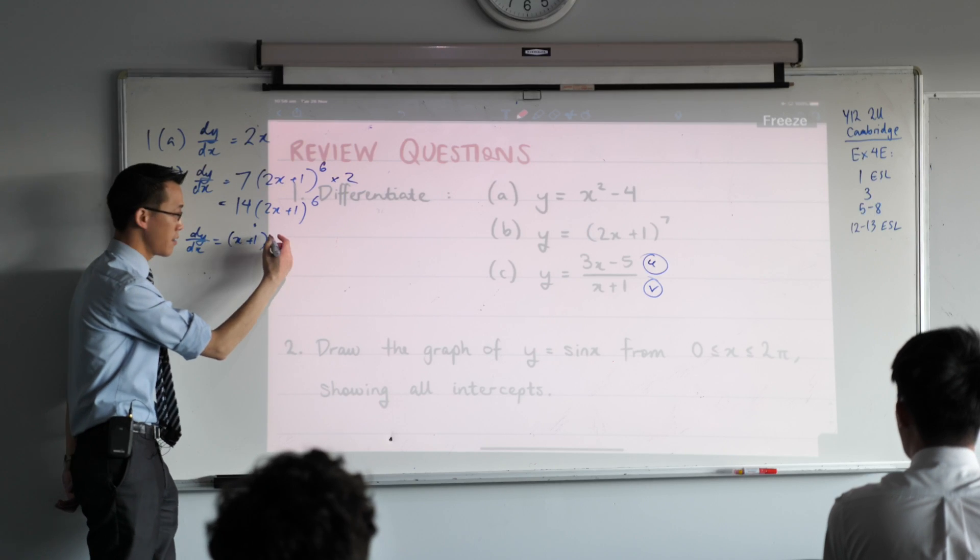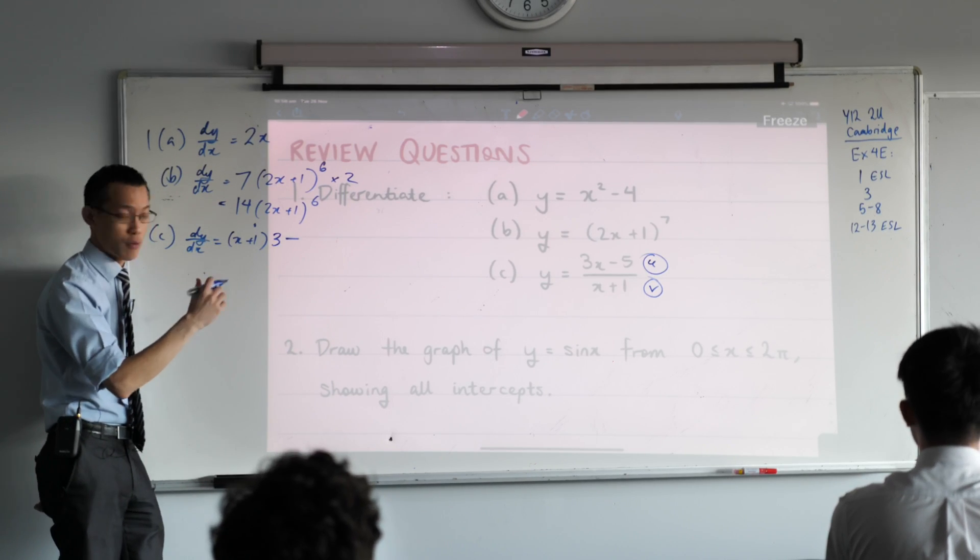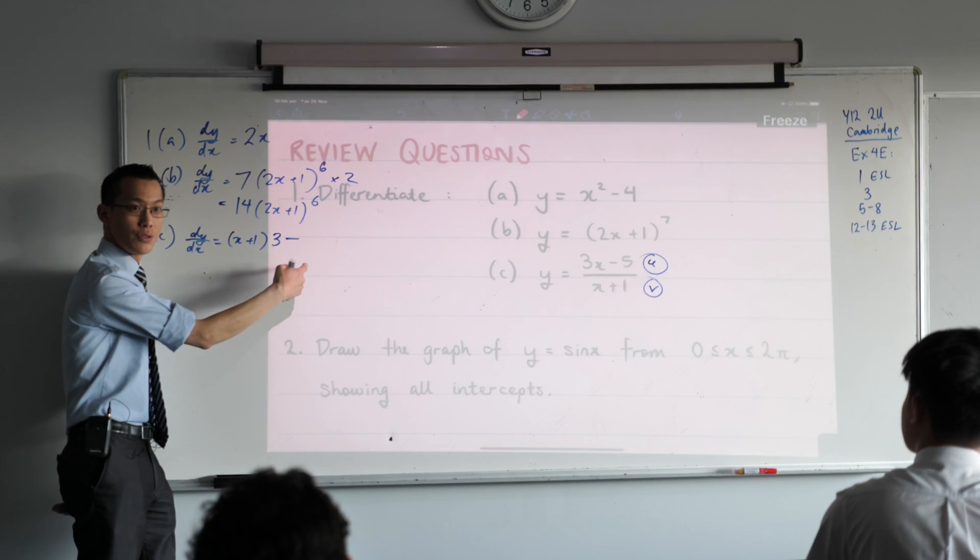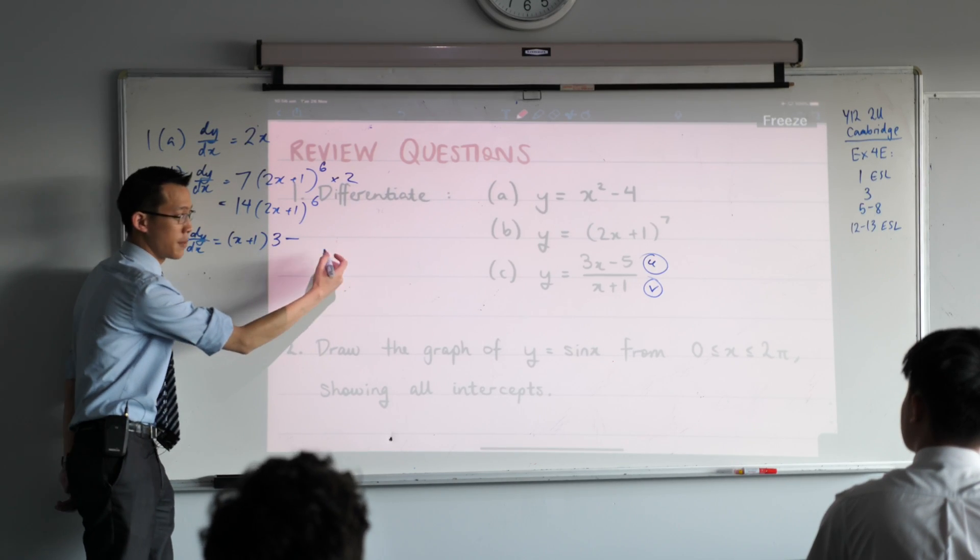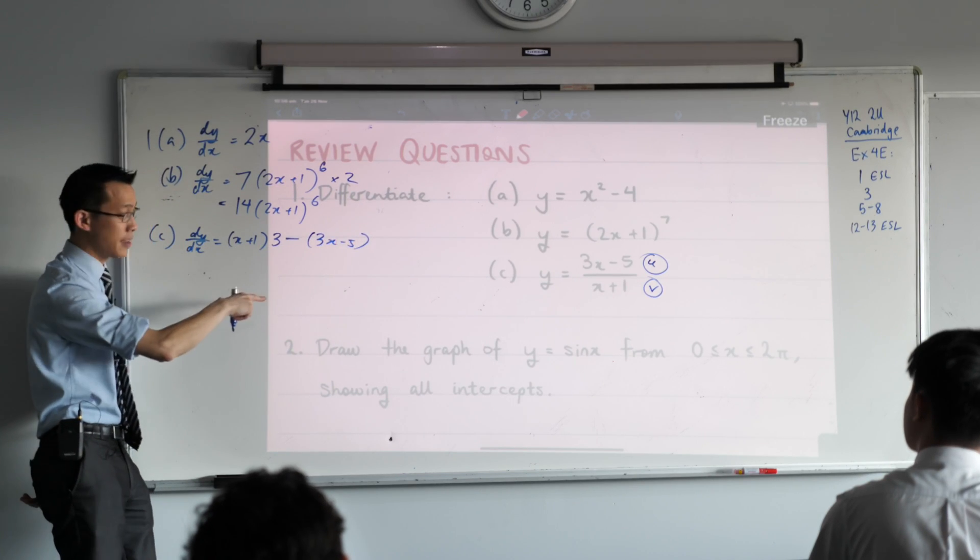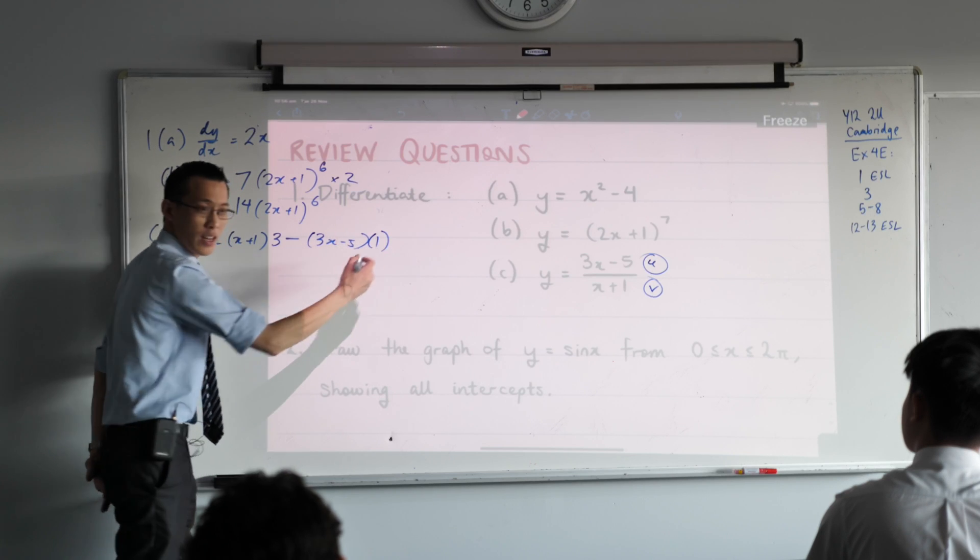Then I do a minus—that's tricky because that's different to the product rule. And then I go again, but instead of v u dash, I'm going to do u v dash. So here comes u: 3x minus 5. V dash in this case is 1, which doesn't change things, but I like to write that it's 1 anyway.